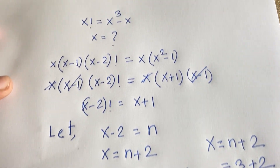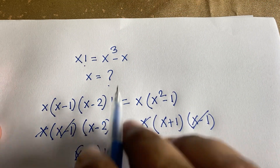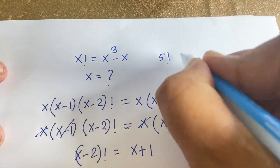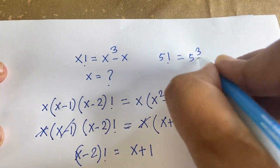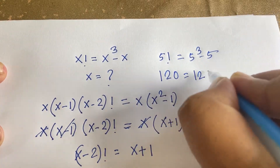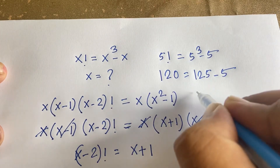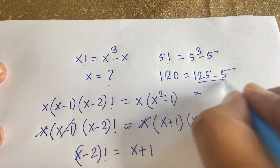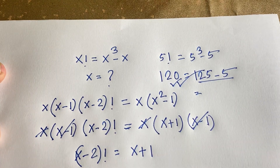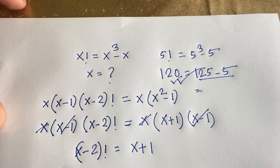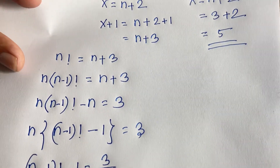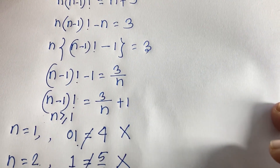Let's check out. Our question is x factorial equals x cube minus x. So 5 factorial is equal to 5 cube minus 5. 5 factorial is 120, and 125 minus 5 is also 120. So x is equal to 5 — this is our right answer. Thank you all. If you enjoyed this video, please subscribe to my channel for other interesting videos. Goodbye. Take care.